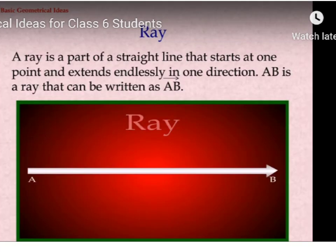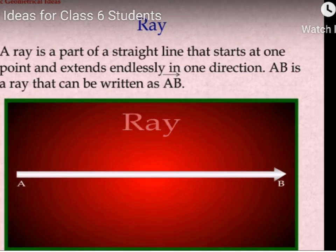See, the next one is Ray. Let us start with Ray. Ray is a part of a straight line that starts at one point and extends endlessly in one direction. See, line can be extended from two sides. But what about ray? Ray has one point which cannot be extended. From the other side, it can be extended, like how light passes in a straight line. AB is a ray that can be denoted as Ray AB. But it is not read as Ray BA.